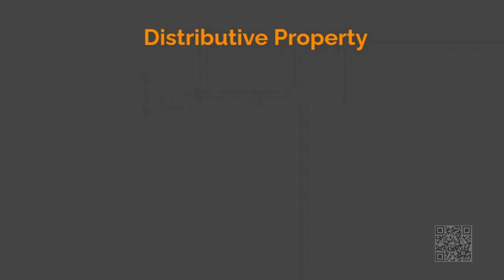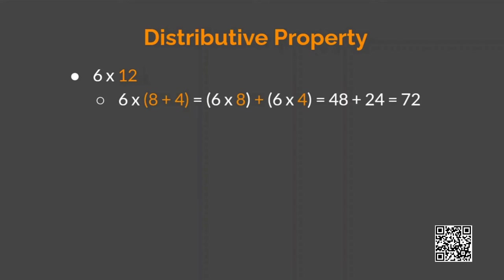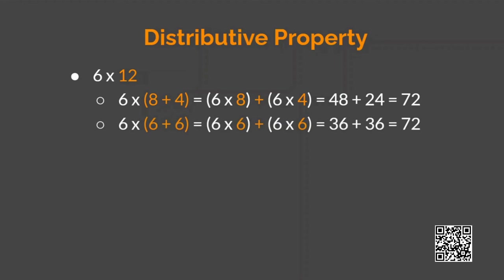As we saw earlier, 12 is split as 8 and 4. You can see here that 6 is distributed over both 8 and 4 as 6 times 8 and 6 times 4. Now 12 is split as 6 and 6. Can you try splitting 12 as 5 and 7? See what total you get — it will be 72. So instead of 12, can we split 6? Yes, definitely. We will look at that.